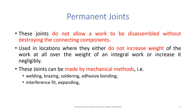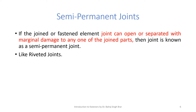Semi-permanent joints are joints where the fastened element can be opened or separated with marginal damage to any one of the joint parts. A typical example is riveted joints. When we want to disassemble riveted joints, the rivets will be broken and the plates will be separated, though there may be slight damage to the plates, which can then be re-riveted to make a joint again.